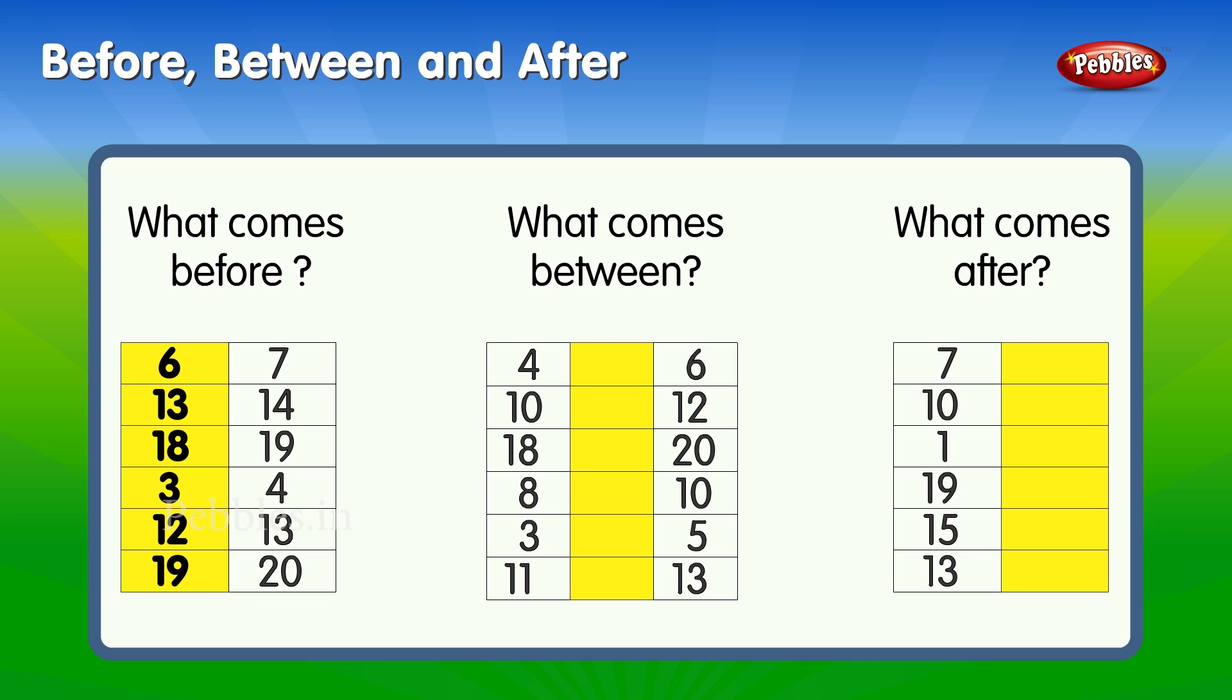What comes between? 4, 6, 5. 10, 12, 11. 18, 20, 19. 8, 10, 9. 3, 5, 4. 11, 13, 12.